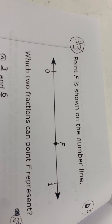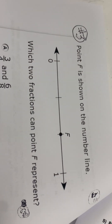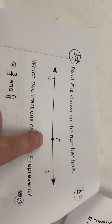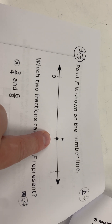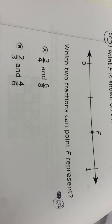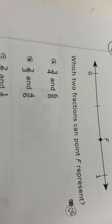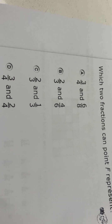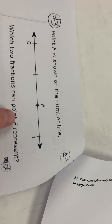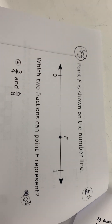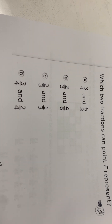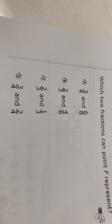Number three says point F is shown on the number line. There is point F, there's 0, there's 1 — so point F is right there. Which two fractions can point F represent? There are your answer choices. Choose the best answer.